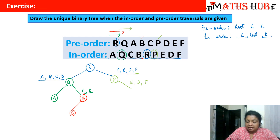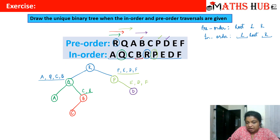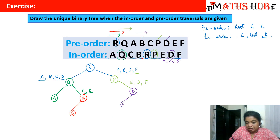Out of E, D, and F, we check the pre-order sequence again to find the next root. D is appearing first, so D is the next root. We come back to the in-order: on the left of D we have vertex E, and on the right we have vertex F. So we draw E on the left and F on the right. This is how we get the unique binary tree from the pre-order and in-order traversals.